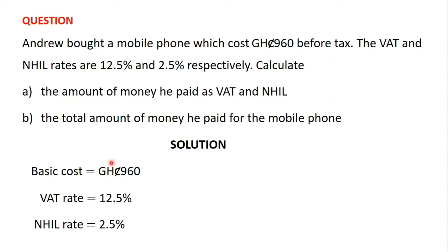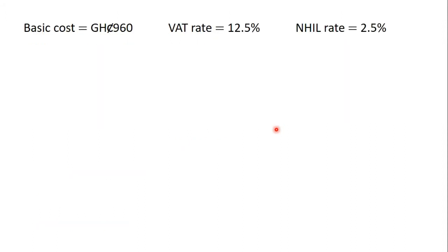The question wants us to calculate the amount of money he paid as tax — that's the amount he paid as value-added tax and national health insurance levy. After that, we should calculate the total amount of money he paid for the mobile phone. We know that the basic cost is 960 Ghana cedis, the VAT rate is 12.5%, and the NHIL rate is 2.5%. If the VAT rate is X, then VAT is equal to X divided by 100, times the basic cost.